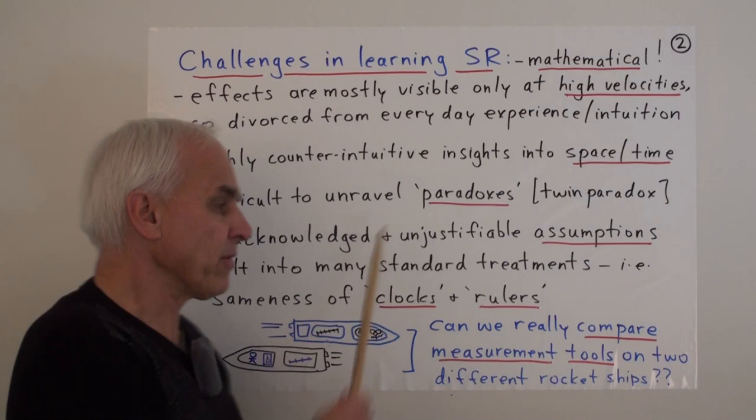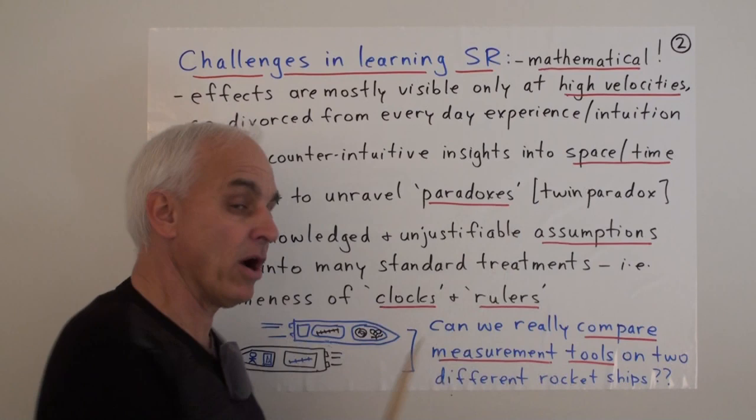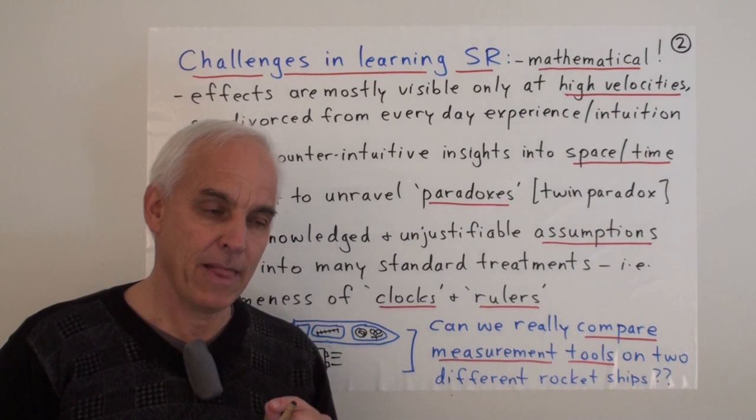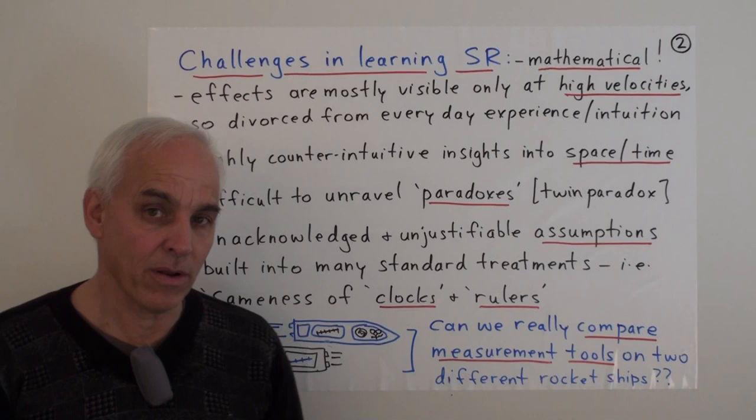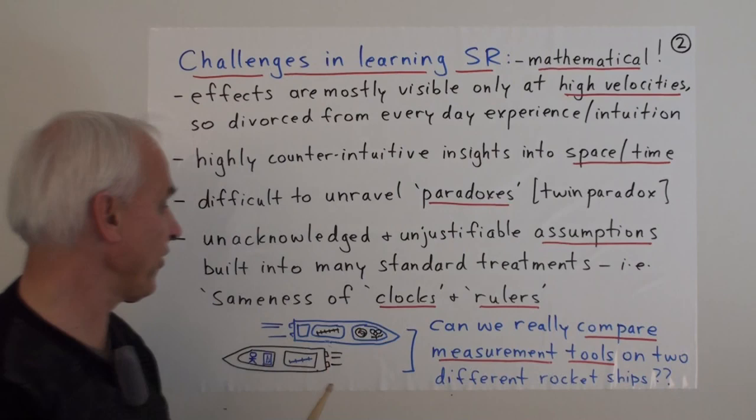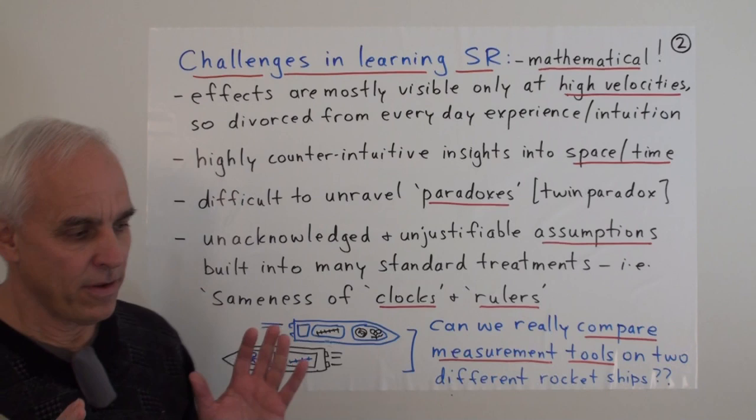It's also difficult to unravel certain paradoxes or apparent paradoxes that come up. Notably, for example, the twin paradox. These really are quite challenging to explain completely clearly. And even, I think, a lot of textbooks don't do such a good job when it comes to that. In my opinion, also, there's an additional difficulty, which is that there are unacknowledged and unjustifiable assumptions built into many standard treatments.